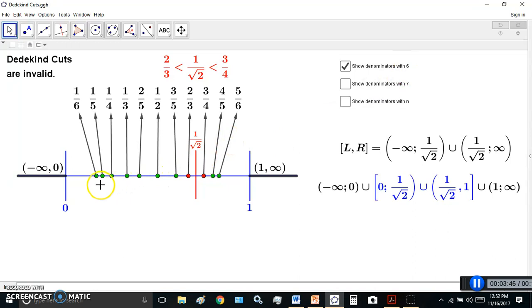What happens is you'll have these points here in the lower set from 1/6 to 2/3. And 2/3 is less than 1 over square root 2, which is less than 3/4, which is this point here. So 1 over square root 2 is sandwiched between these two points.